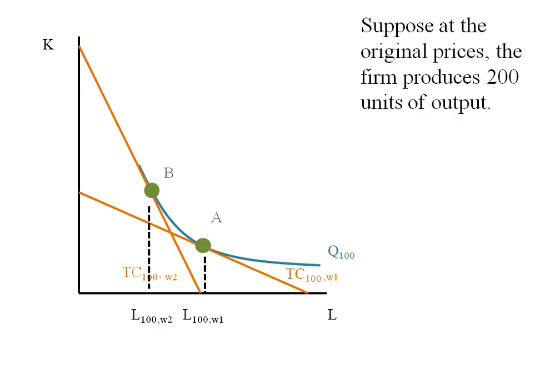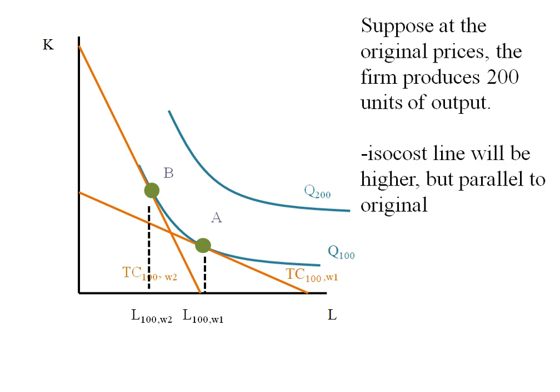Let's now see what happens when we keep our original prices but see if this firm decides to produce more units of output. Here we have an isoquant where the firm is producing 200 units and at the original prices the isocost is going to be higher but parallel to that original one. It'll be parallel to TC 100 comma W1.